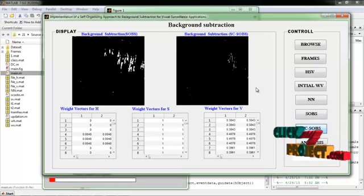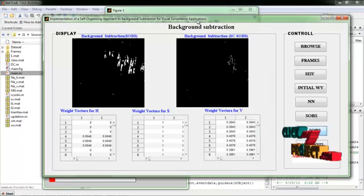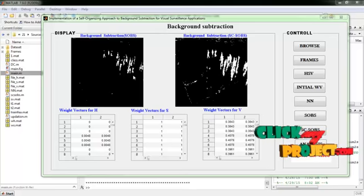Now we extract the background subtraction by using the SCSOPS. And it is the background subtraction of SCSOPS. And it will take some more time for the process. And then visually compare both SOPS and SCSOPS algorithms. The SCSOPS algorithm will extract the background at a very accurate level.